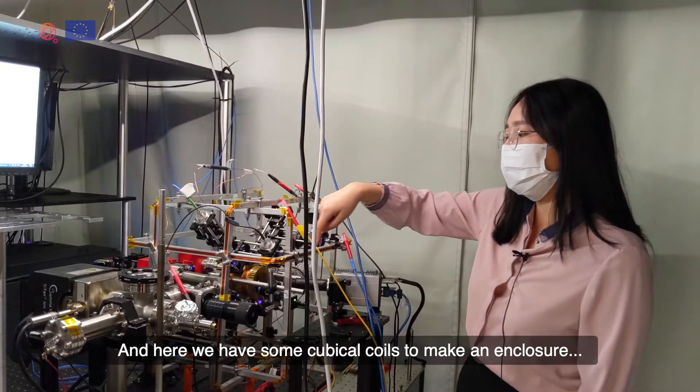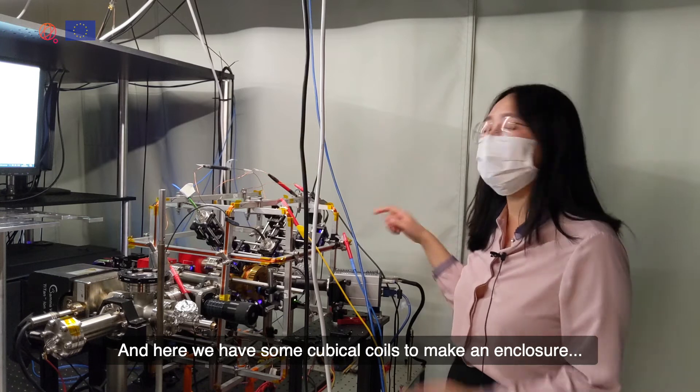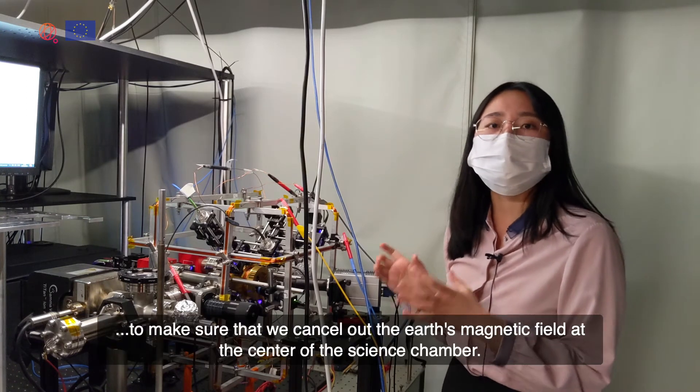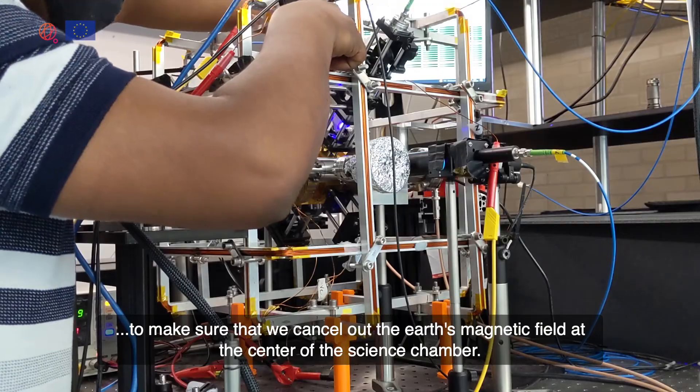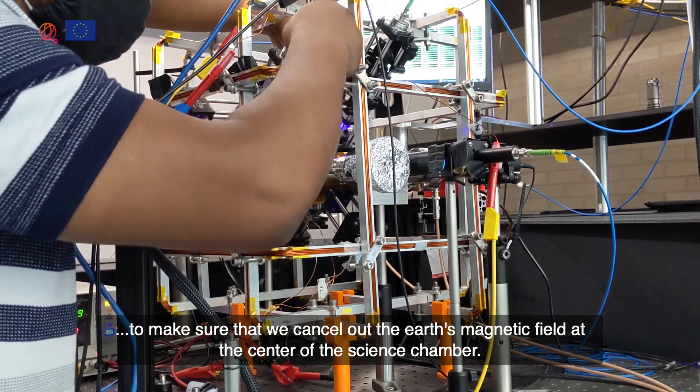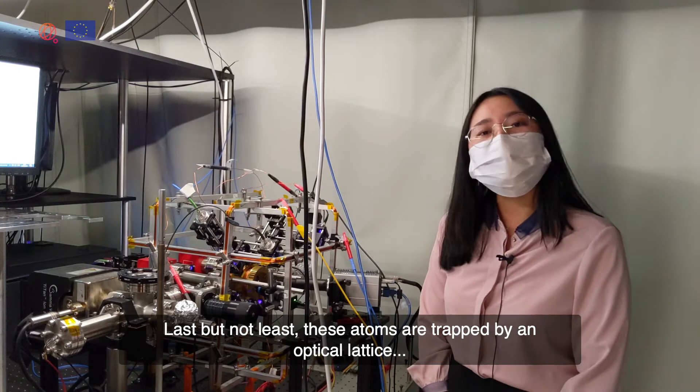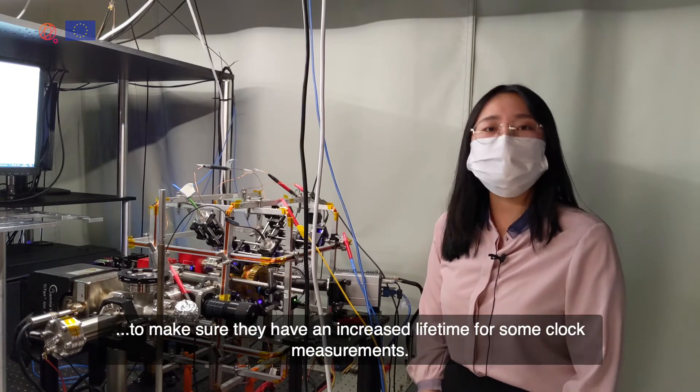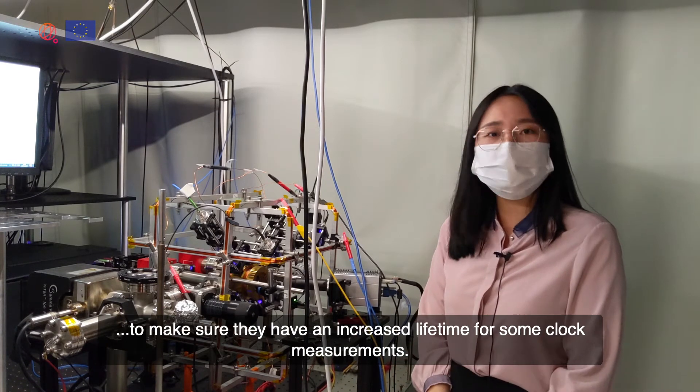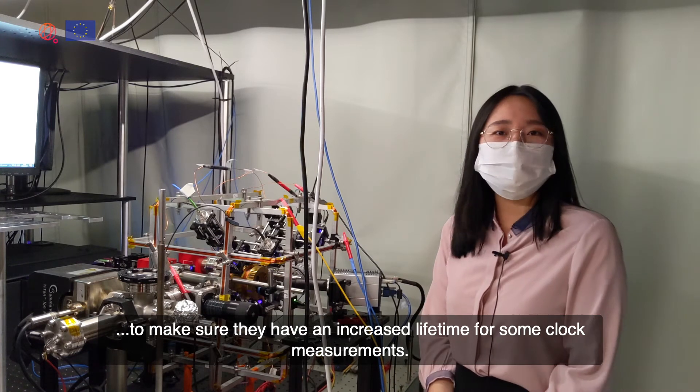Here we have some cubical coils to make an enclosure to cancel out the Earth's magnetic field at the centre of the science chamber. Last but not least, these atoms are trapped by optical lattice to ensure they have increased lifetime for clock measurements.